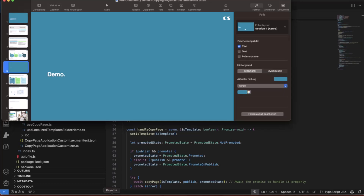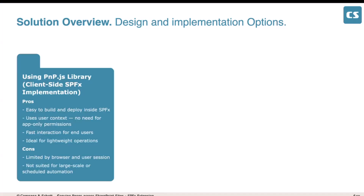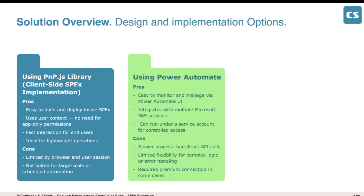There are multiple ways to implement this. I wanted to give the community one easy package — add it to the tenant and use it. But there are other approaches. You could use Power Automate: instead of the use copy page hook, you create another hook to trigger a Power Automate flow. This is useful if you need an approval process in the middle, need to communicate with Microsoft 365 services, or want to send a notification email once the page is copied. The trade-off is it will be a bit slower since you're sending a request and waiting for a response.